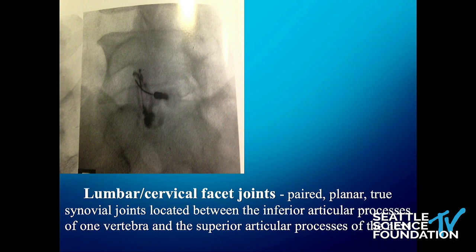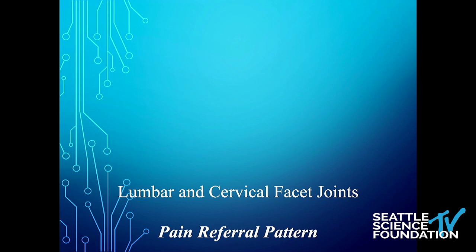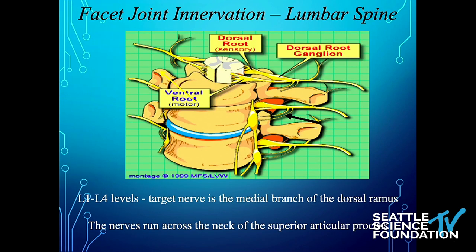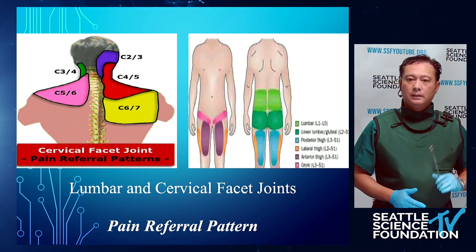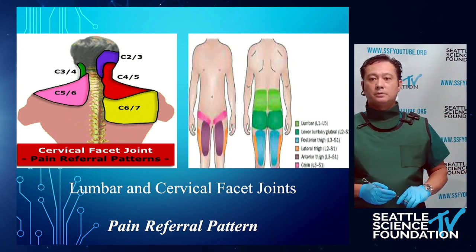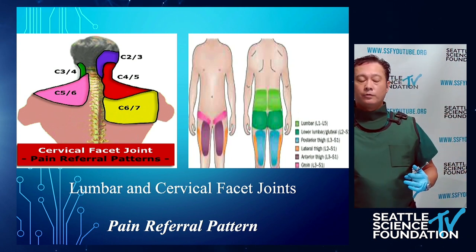If we kind of look at the cervical and lumbar facet joints — the paired planar synovial joints located between the inferior articular processes of one vertebra and the superior articular processes of the next — and look at the lumbar and cervical facet joints and their referral patterns, this is something really key to focus on.